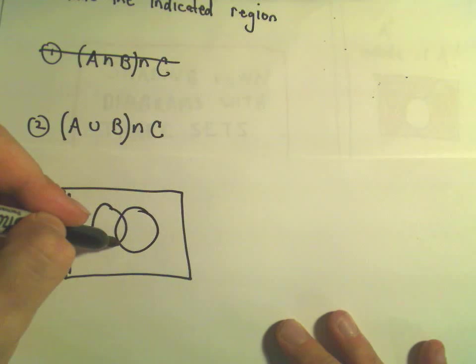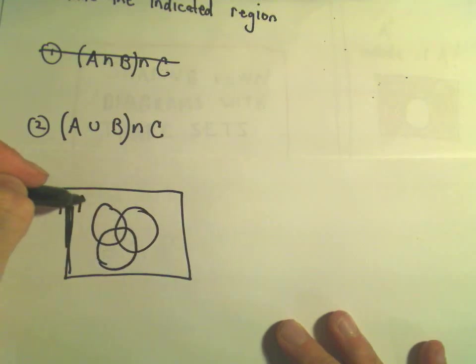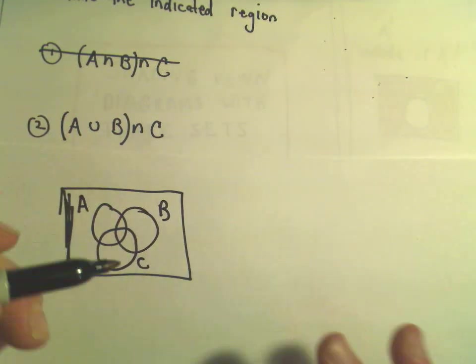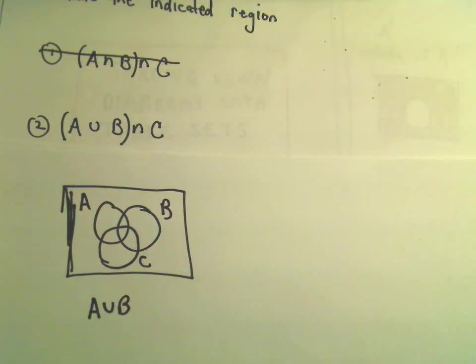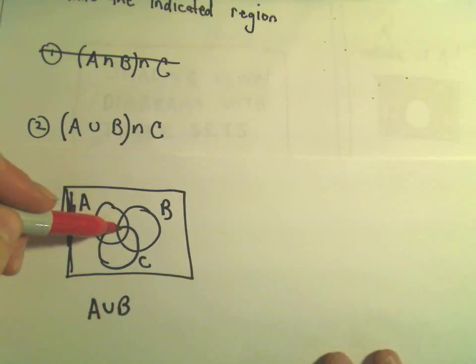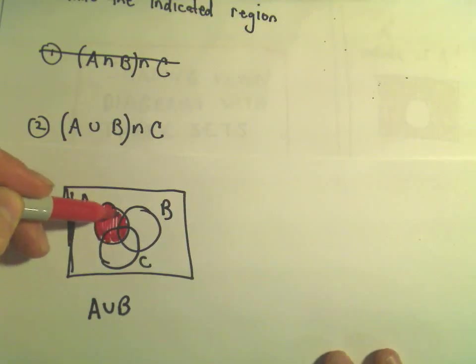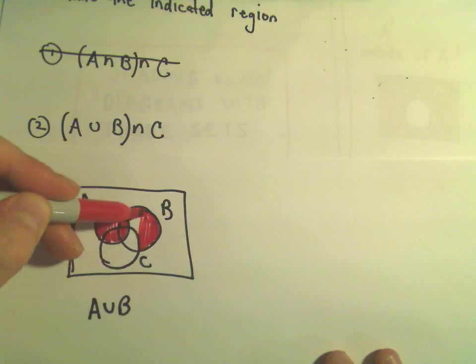So there's A, there's B, there's C. If I shade A or B, again, we're just shading everything in circle A along with everything in circle B. So it says you get shaded if you're in A or B. Okay, so that would be everything in those two circles.